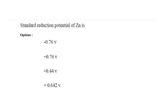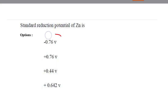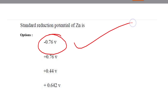Next question: the standard reduction potential of zinc. The options were -0.76 volts, +0.76 volts, +0.44 volts, and +0.642 volts. The answer is -0.76 volts.